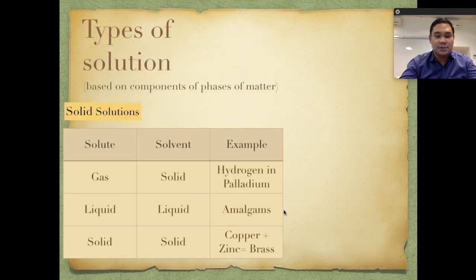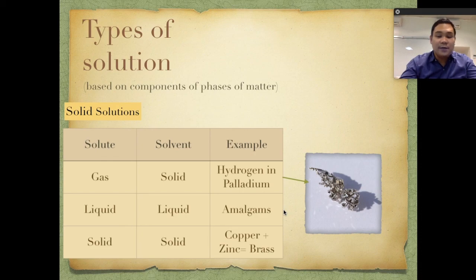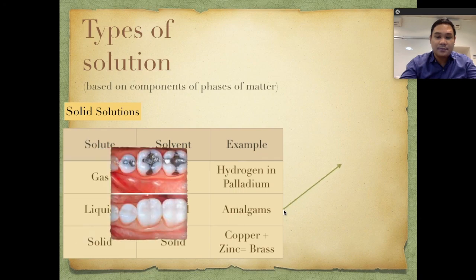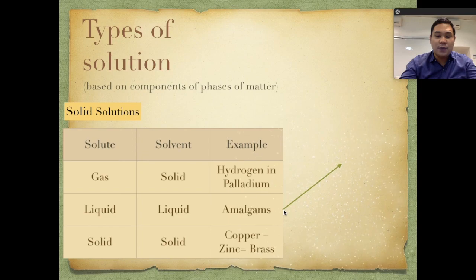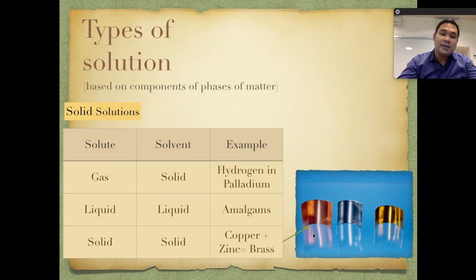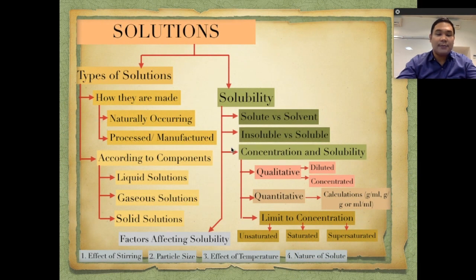For solid solutions, a gas solute in a solid solvent is exemplified by hydrogen in palladium — there is no chemical interaction between them, they are just physically combined. For a liquid solute in a solid solvent, we have amalgams, typically used in dental fillings. For solid-solid, we have alloys. One example is brass — copper mixed with zinc forms brass, with no chemical reaction between them; they are simply mixed together.